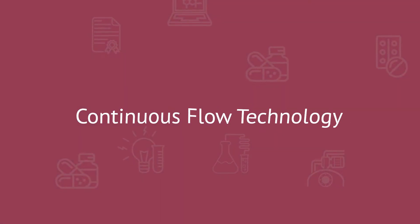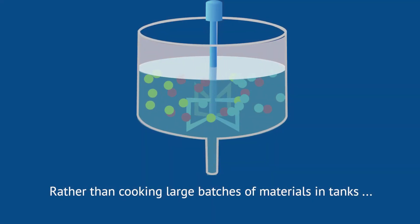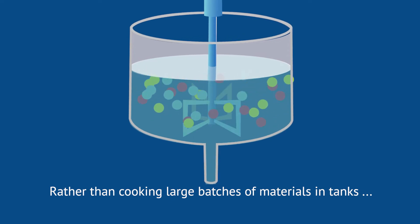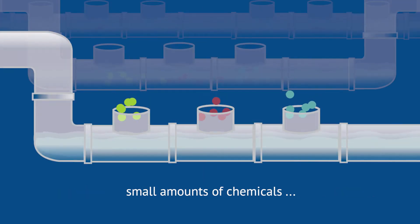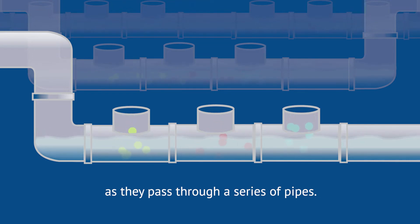Chief among these is continuous flow technology. Rather than cooking large batches of materials in tanks, flow technology continuously mixes small amounts of chemicals as they pass through a series of pipes.